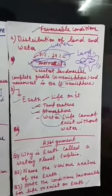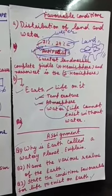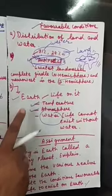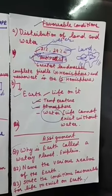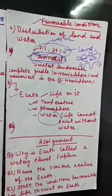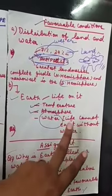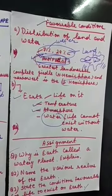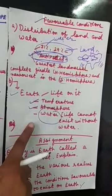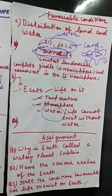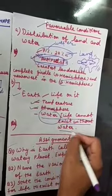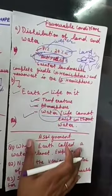The greatest land masses form an almost complete girdle in the northern hemisphere, while land masses are numerous in the southern hemisphere. Another favorable condition for life on earth is suitable temperature, suitable atmosphere, and a suitable water cycle. Life cannot exist without water, and earth's water cycle is its most unique feature.